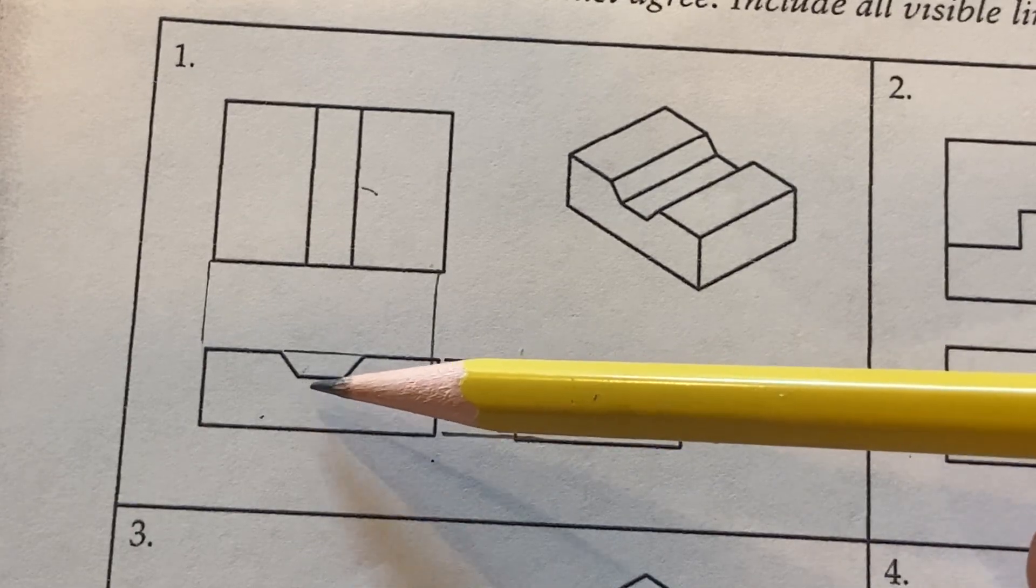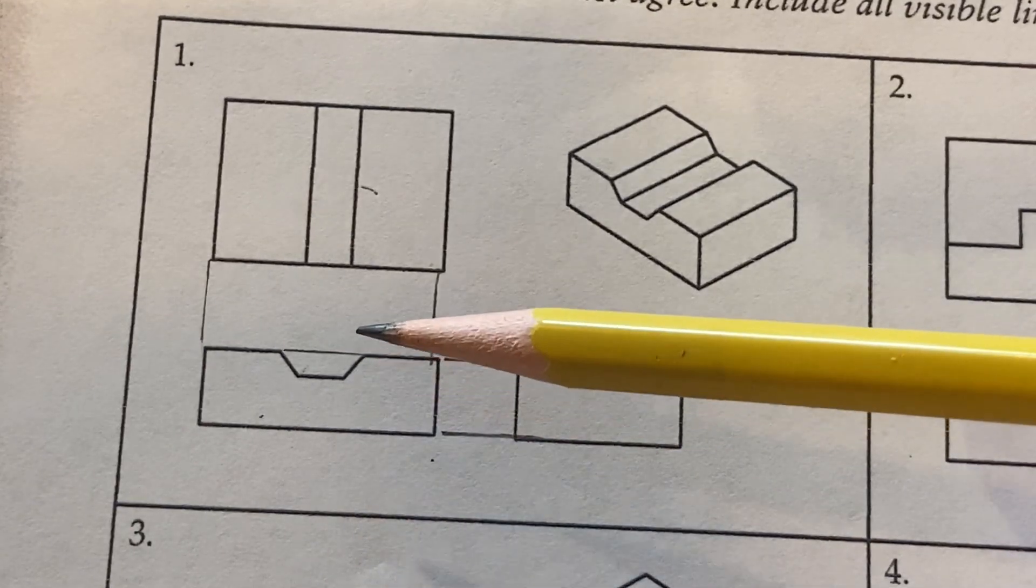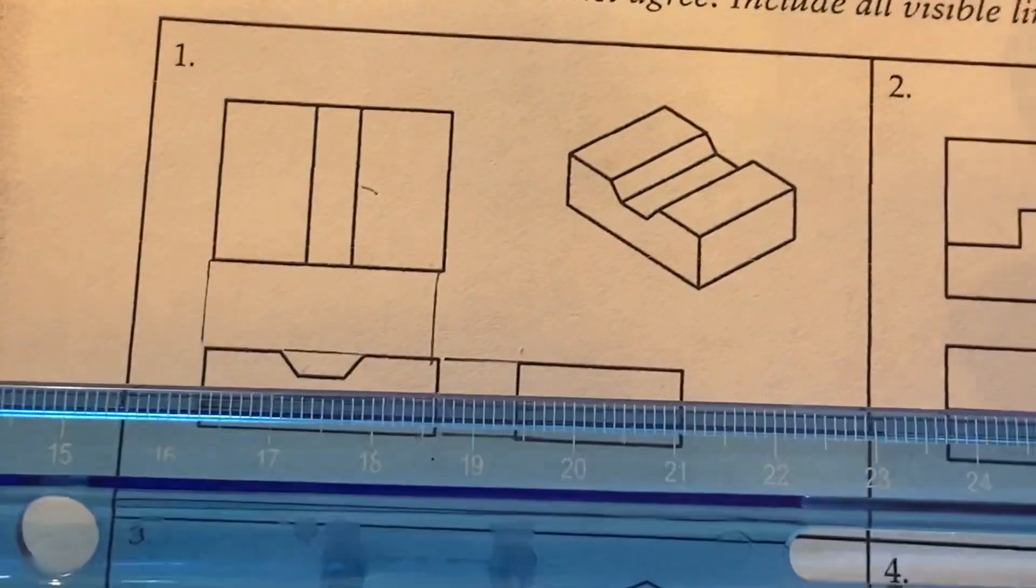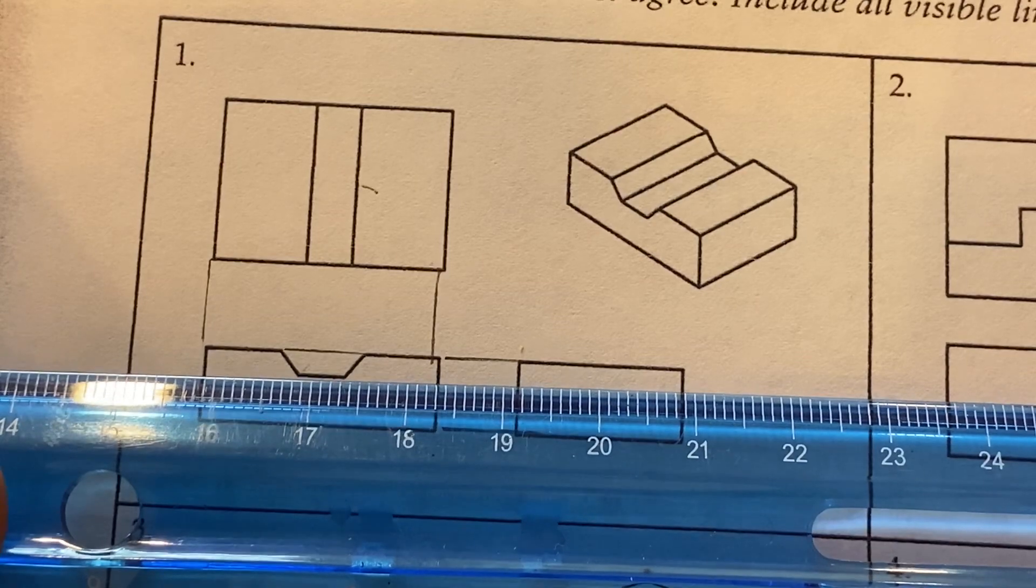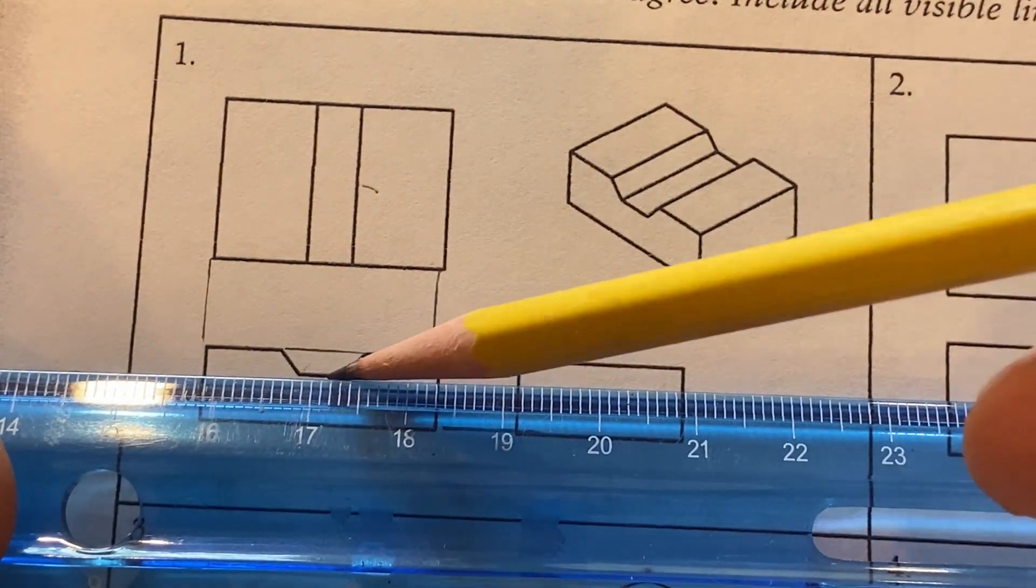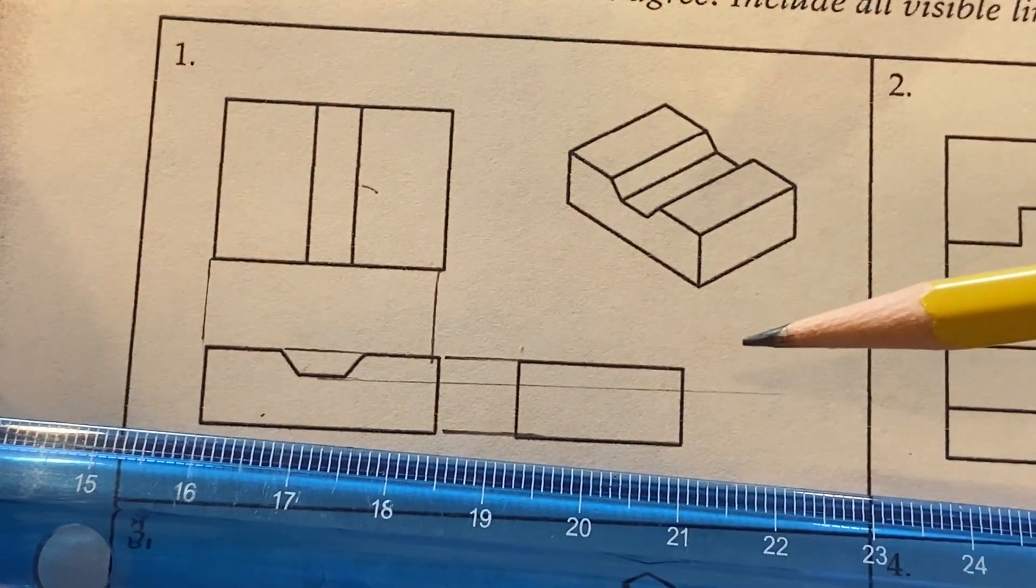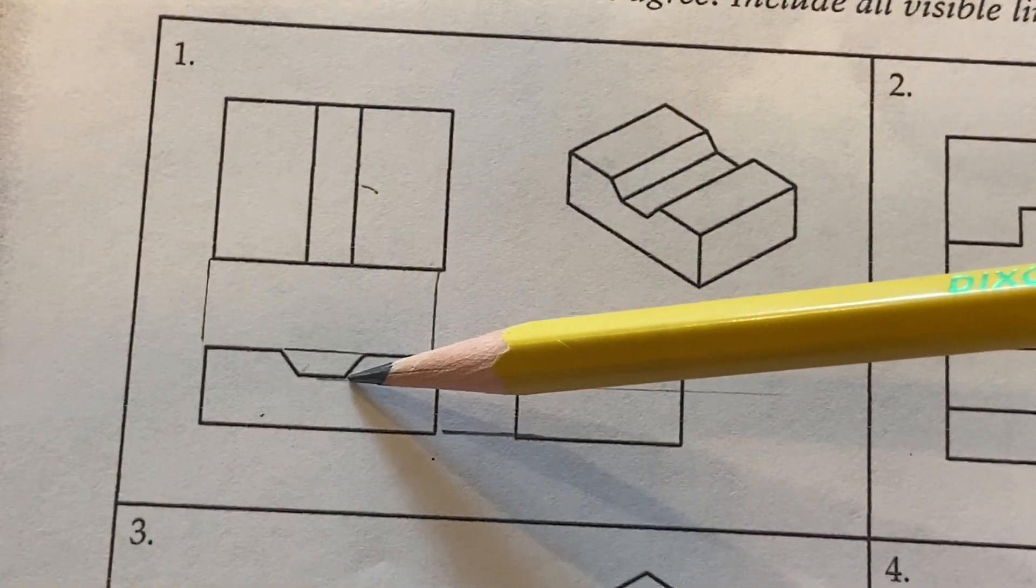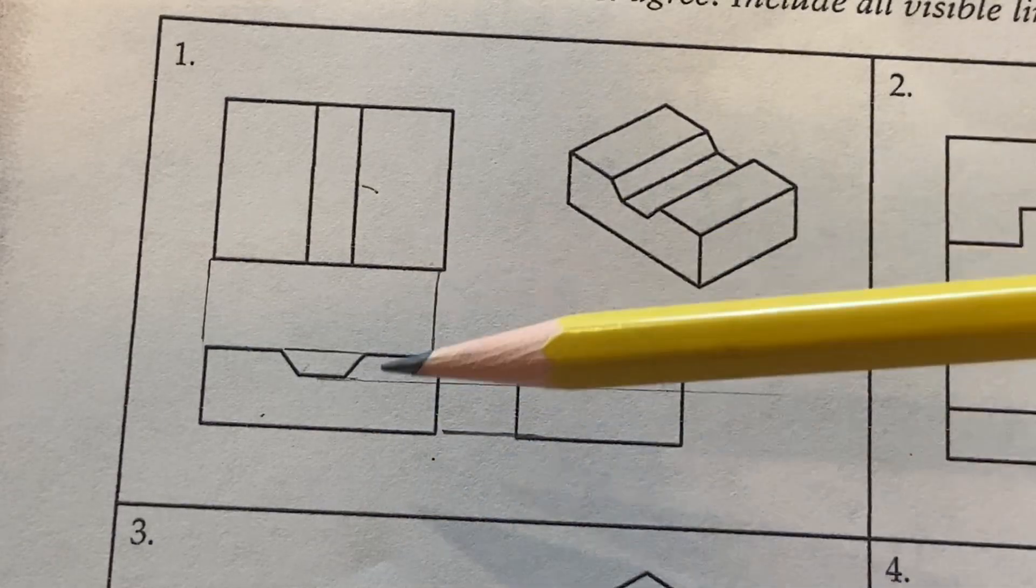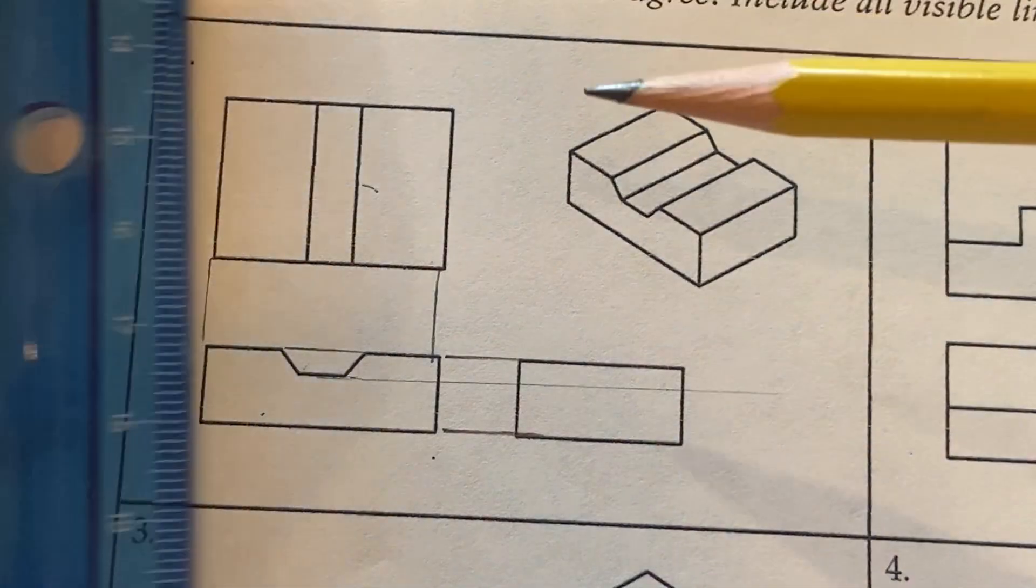I see an intersection point right here, the intersection between this horizontal line and this angled line right here. So I need to project that over into the side view. Now, I'm going to do this nice and light. We'll just project this over a real faint line so that you can barely see it. And if I'm projecting that point over this way, I also need to project it up. So we'll go ahead and project that up. Well, lo and behold,